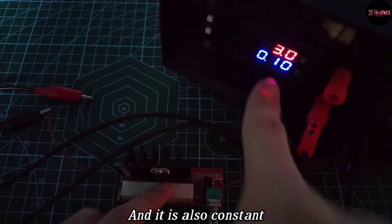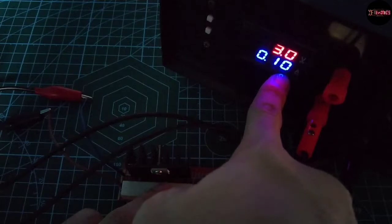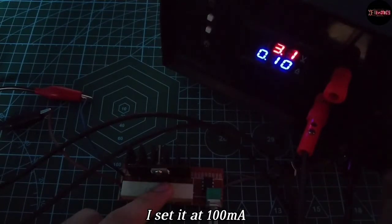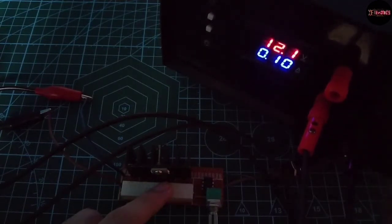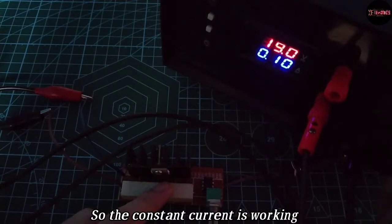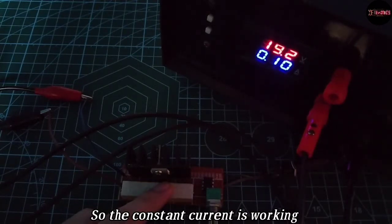And it is also constant. By looking at the current draw, I have set it at 100 milliamps, and by increasing the voltage the current draw doesn't change at all. So the constant current is working.